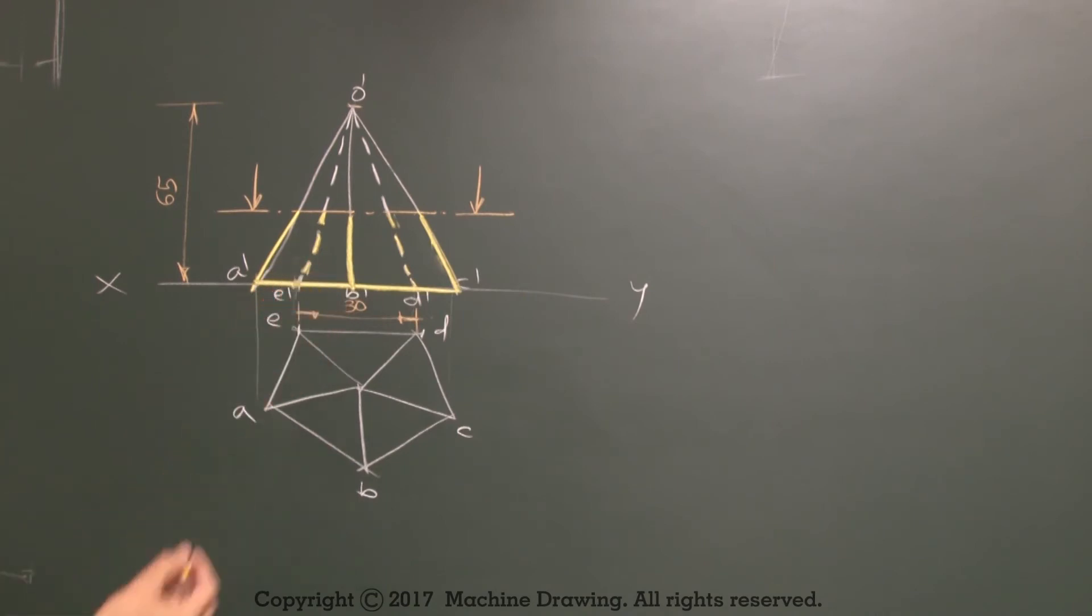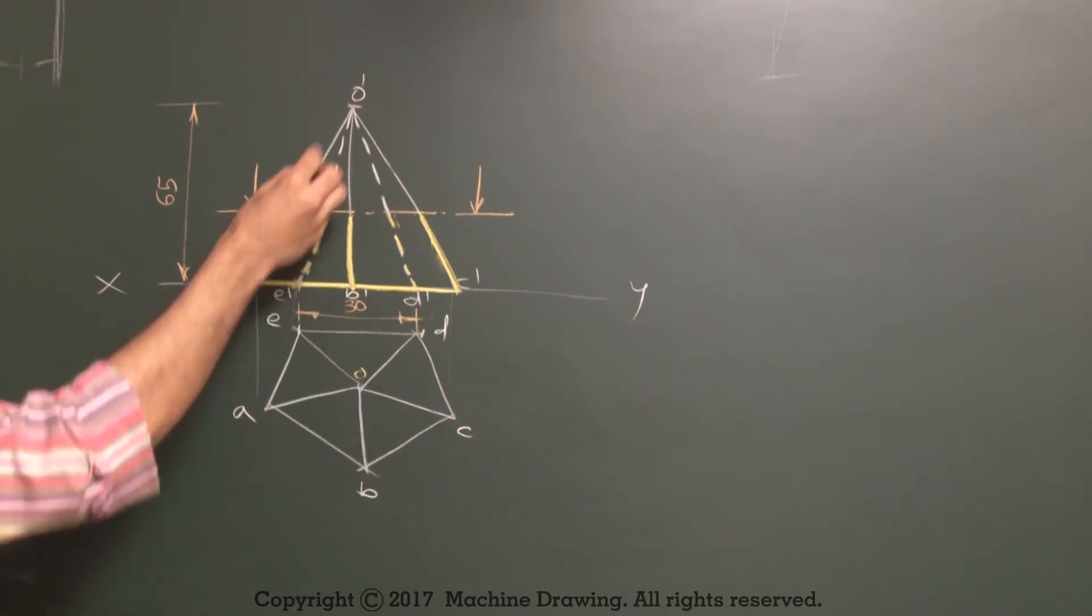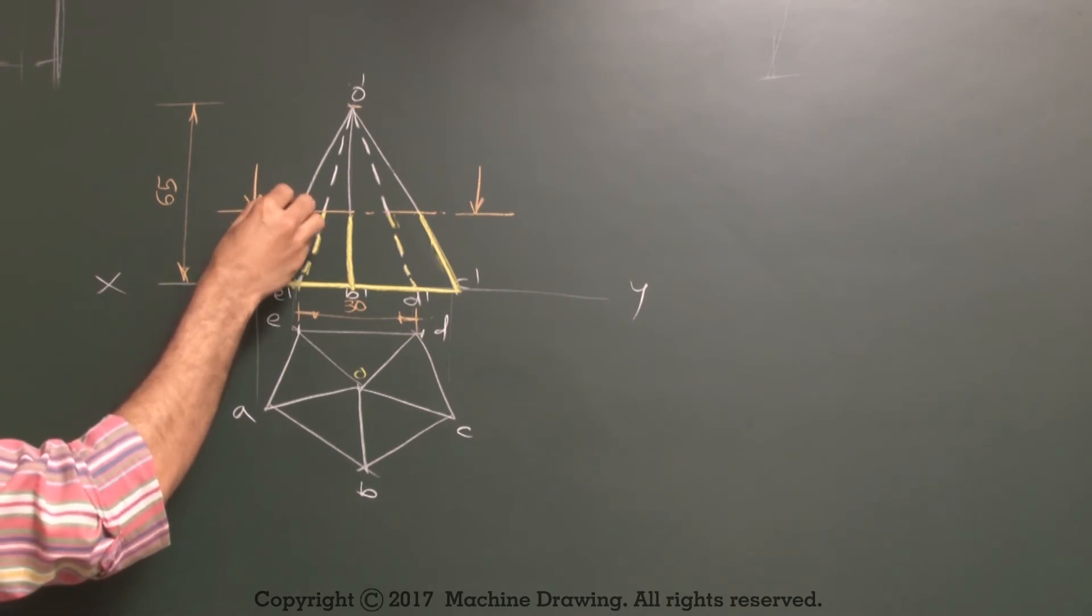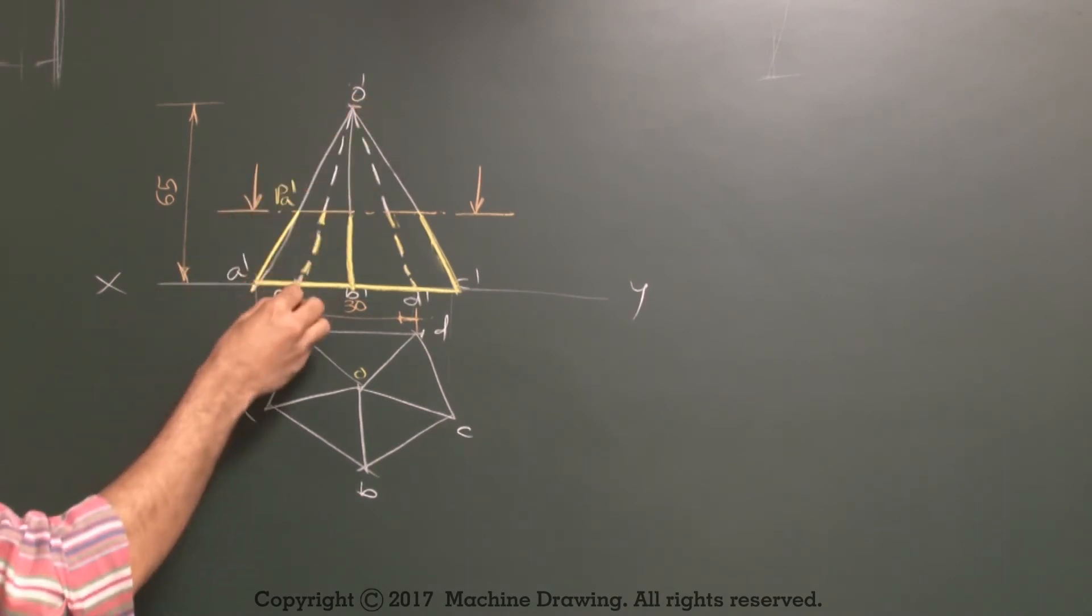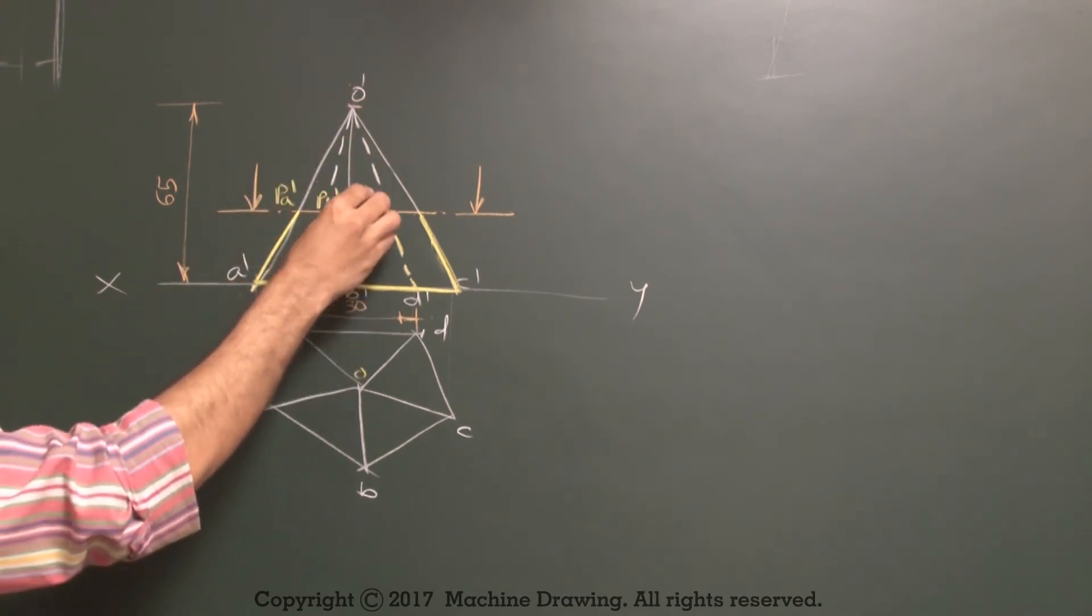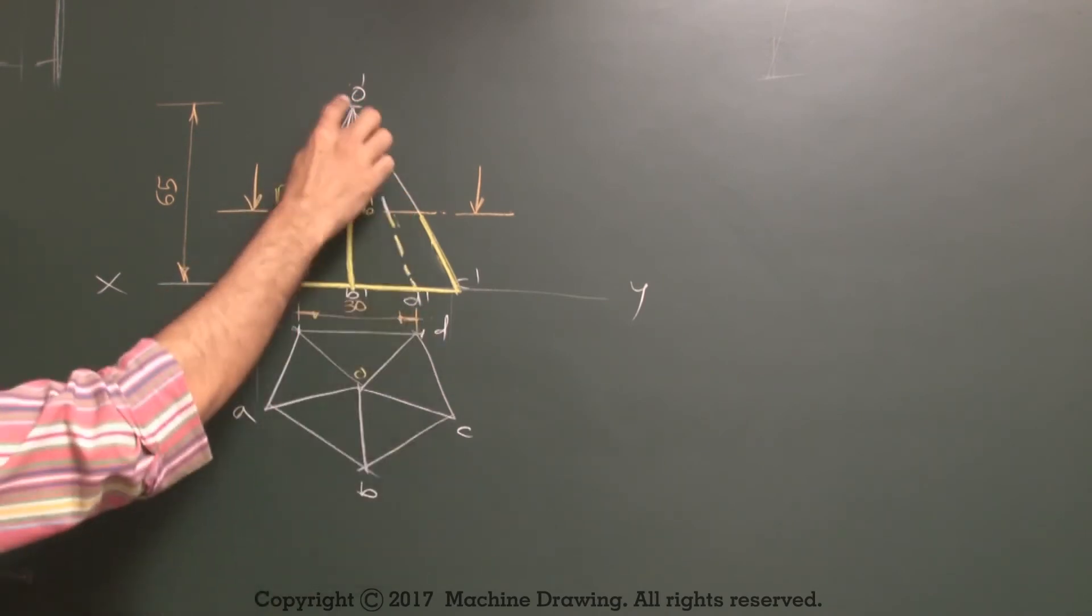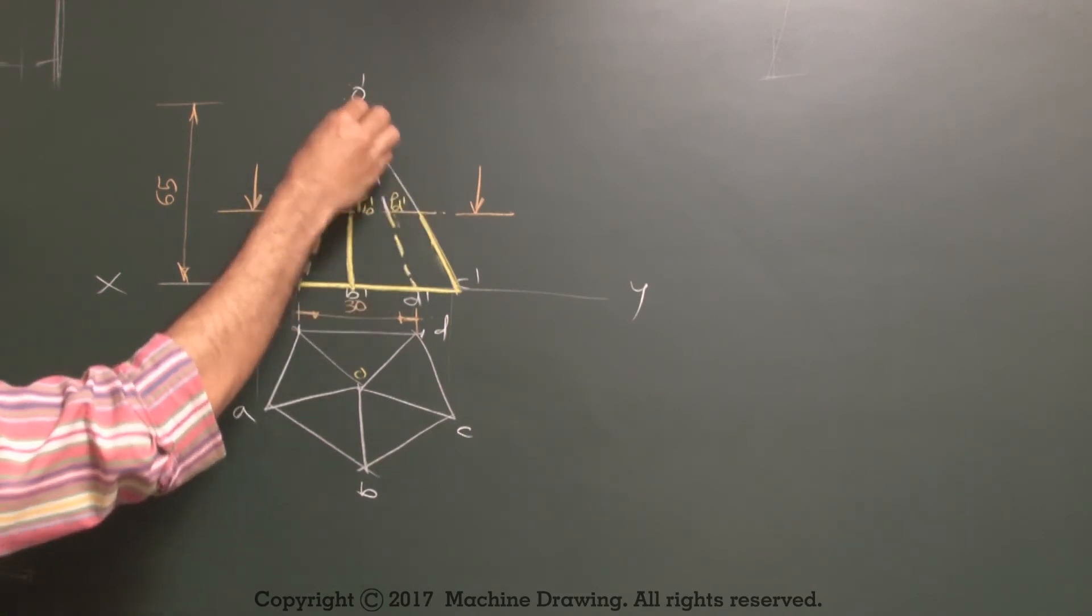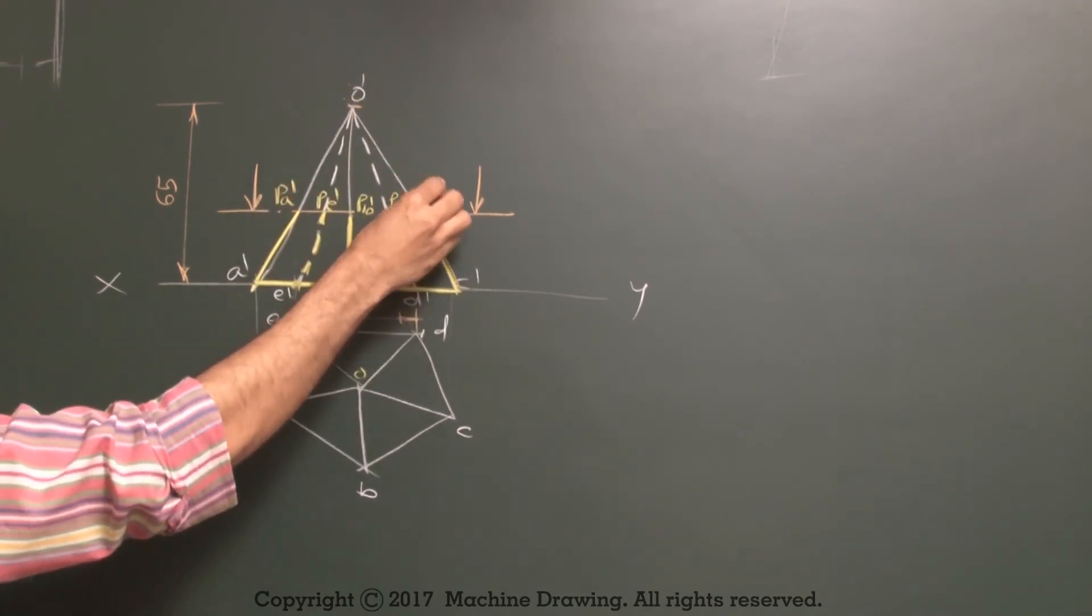So now how many points we got? If you see over here, we have cut O dash A dash, so this is PA dash. O dash E dash, so this is PE dash. O dash B dash, this is PB dash. O dash D dash, this is PD dash. O dash C dash, so this is PC dash.